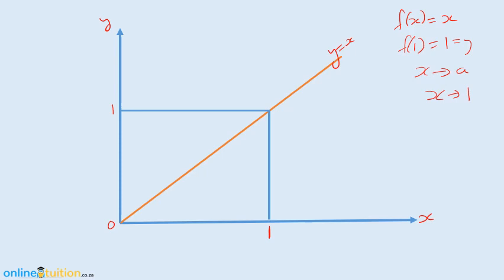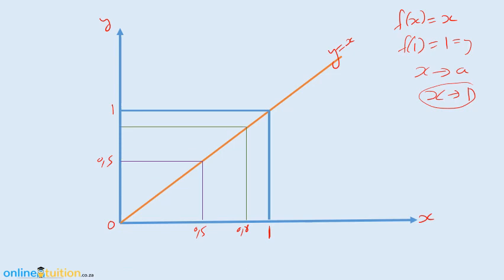What do we mean by x approaching 1? Let's start at x equal to a half — its y value is going to be 0.5. Let's creep up closer to 1. If we take x equal to 0.8, the y value is 0.8. Notice what we're doing — we are creeping up towards 1, not actually getting to 1, but getting close enough. The next one: 0.99. If x is 0.99, then the y value is 0.99. So as we get closer and closer to 1 on the x-axis, we're getting closer and closer to some limiting value on the y-axis.